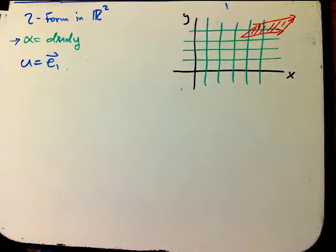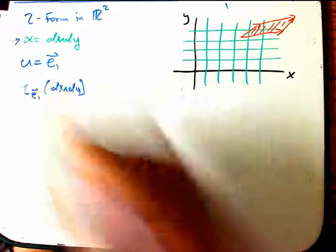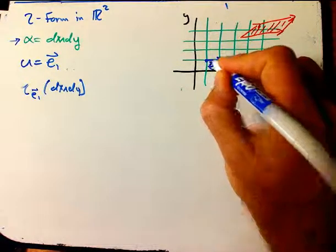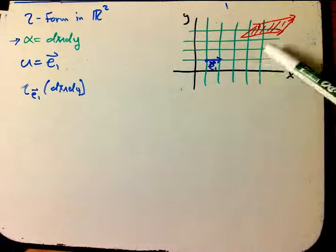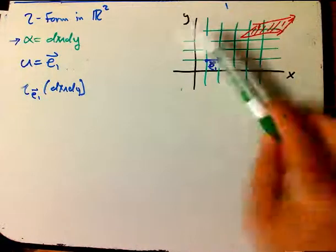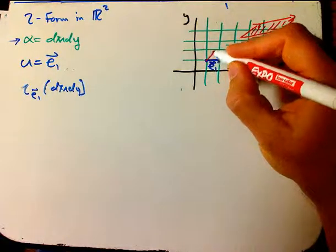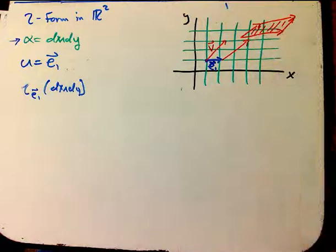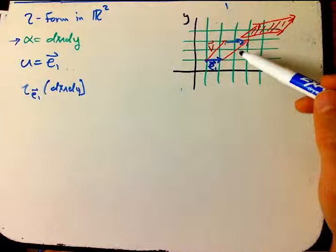So what if I did the interior product I_E1 on dx wedge dy? Well, E1 just looks like this - just the basis vector going in the first coordinate direction, the x direction. So what do I want? I want to create a new one-form, so just stacks going in one direction, such that if I took that E1 and I took some other vector v and made the parallelogram - that doesn't look very parallel, does it? Sorry about that.